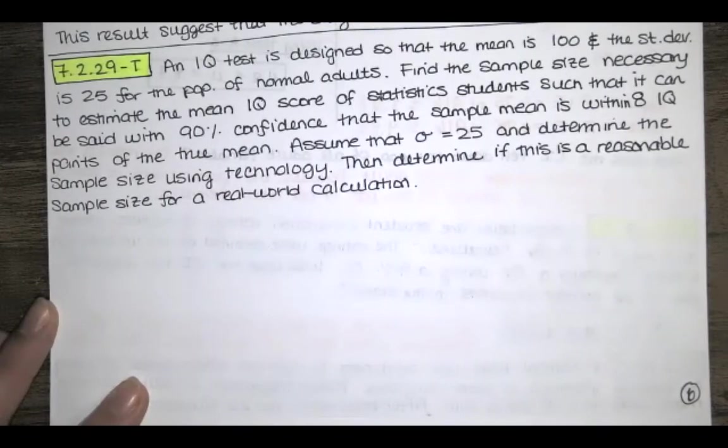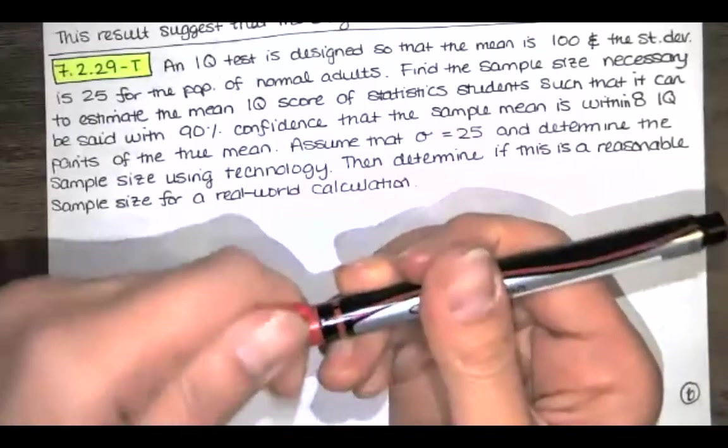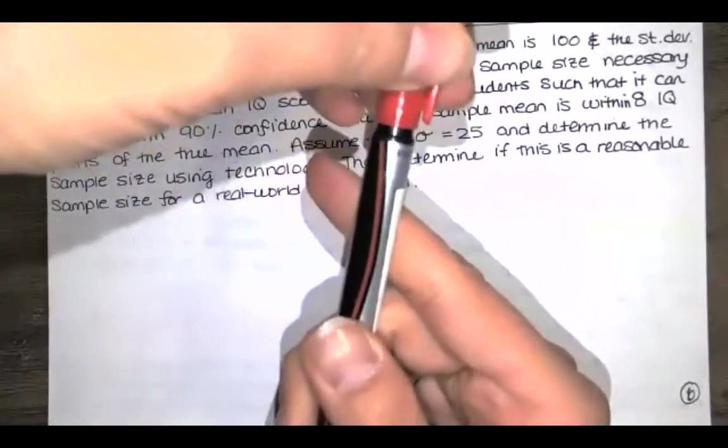Assume that the population standard deviation is 25 and determine the sample size using technology. Then determine if this is a reasonable sample size for a real-world calculation. So I'm going to do this on my paper and then we'll use technology to find the same sample size.